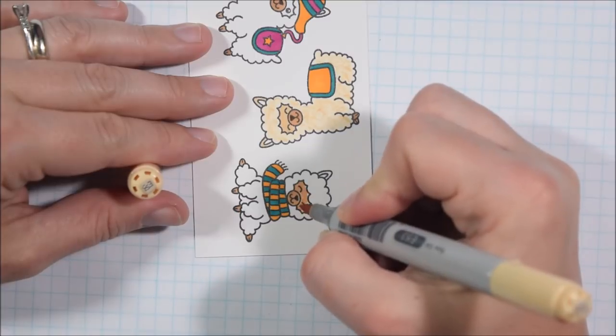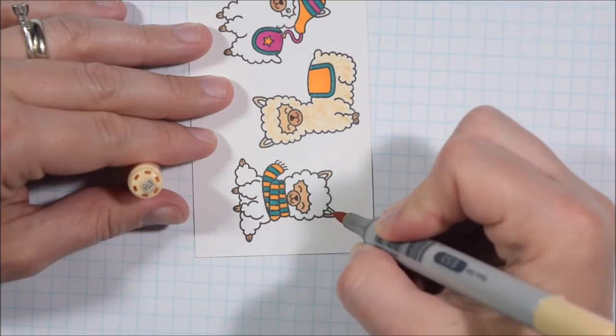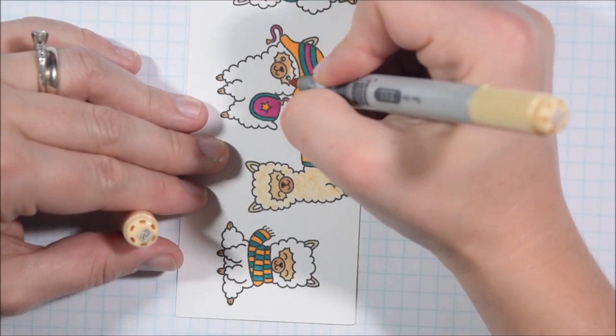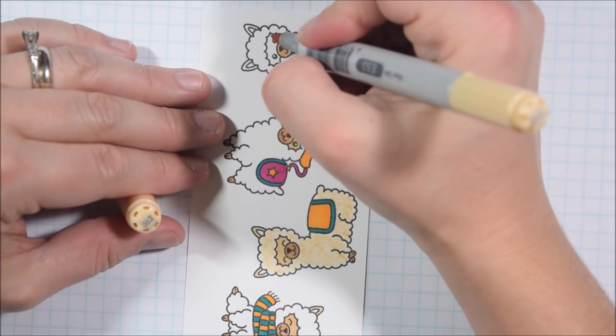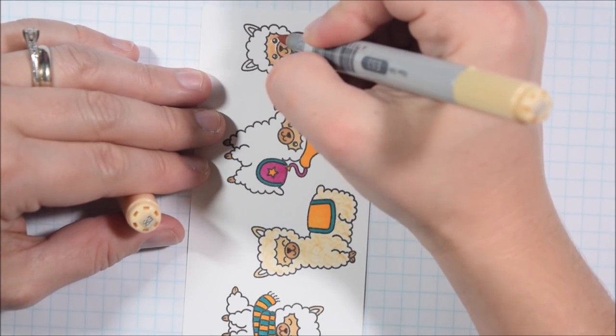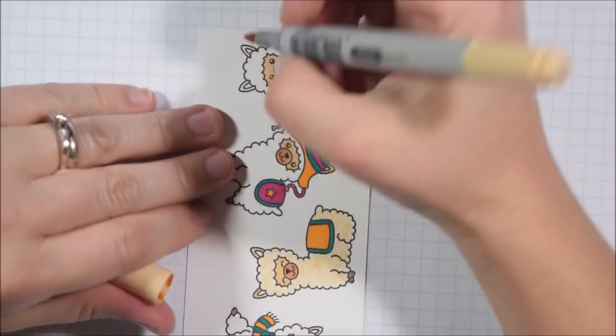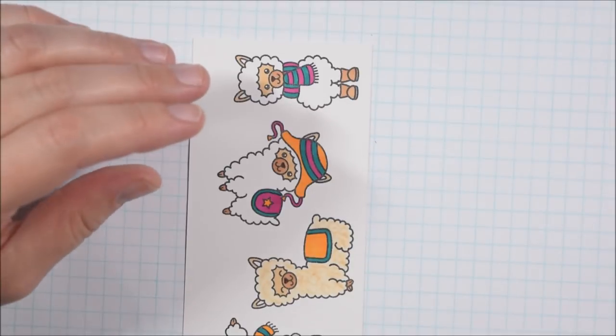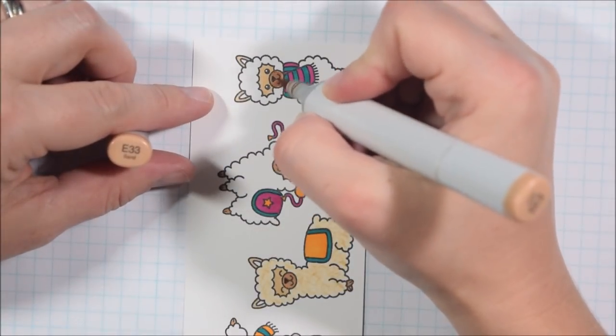I can take that one marker and go across a couple of the alpacas at one time and really make this much quicker. I also decided to do the inside of the ears in the E50. When I was looking at pictures of alpacas they don't have pink ears even though it's kind of the go-to ear color.